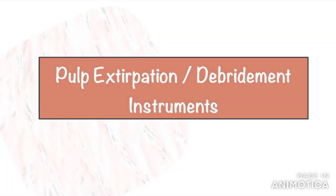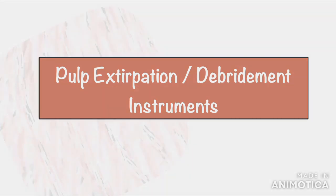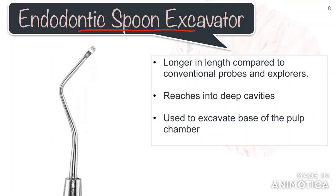After the access opening, the next step is pulp extirpation or debridement. It is necessary to remove all the pulp tissue present in the chamber to be able to locate the orifices clearly. The first instrument that comes in handy for this is the endodontic spoon excavator. The striking feature of this instrument is that it is larger than a conventional excavator, and its long shank allows us to reach the floor of the pulp chamber, as opposed to conventional ones which are unable to reach the deeper part of the cavity.